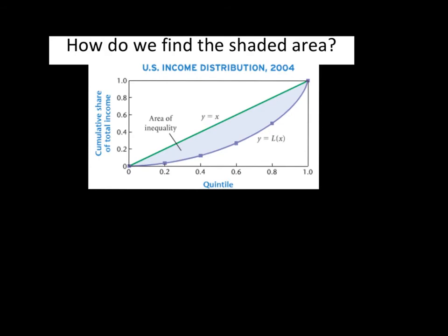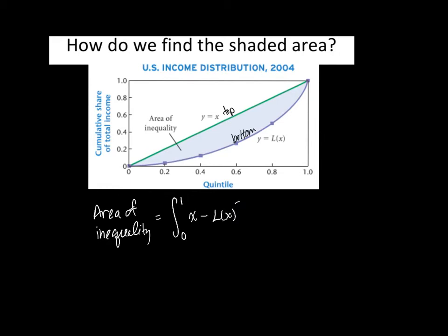The next question is: how do we find that shaded area of inequality? The area of inequality can be represented with an integral, since we can use integrals to find areas between curves. The integral goes from 0 to 1 on the x-axis. The top function is y = x and the bottom function is the Lorenz curve. So the area of inequality equals the integral from 0 to 1 of (x minus the Lorenz curve).